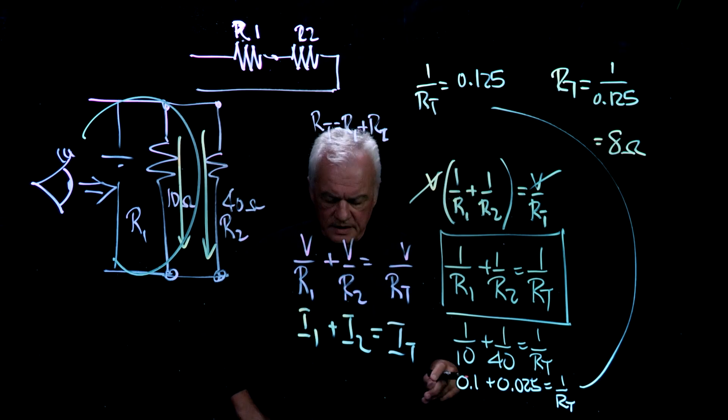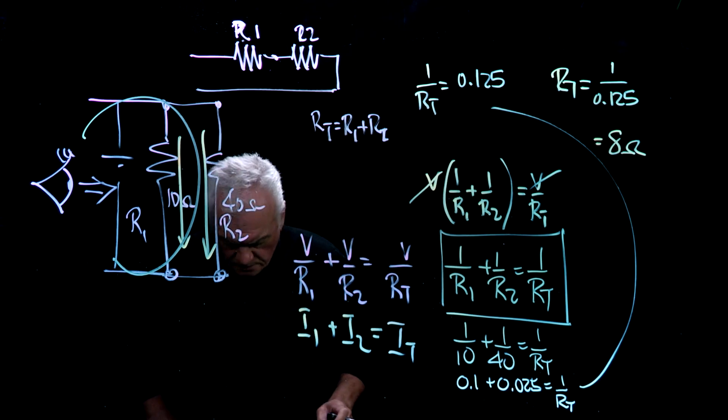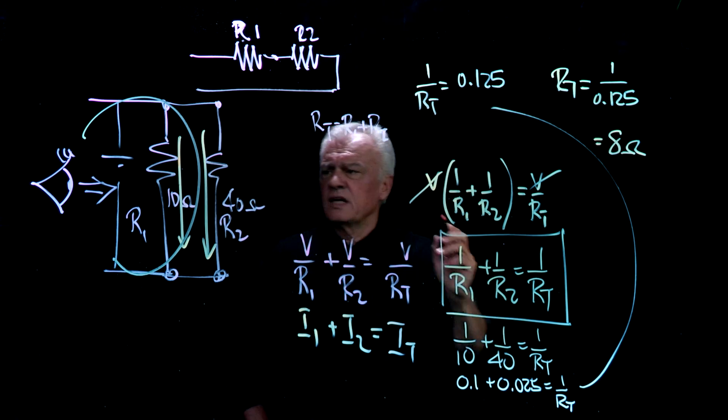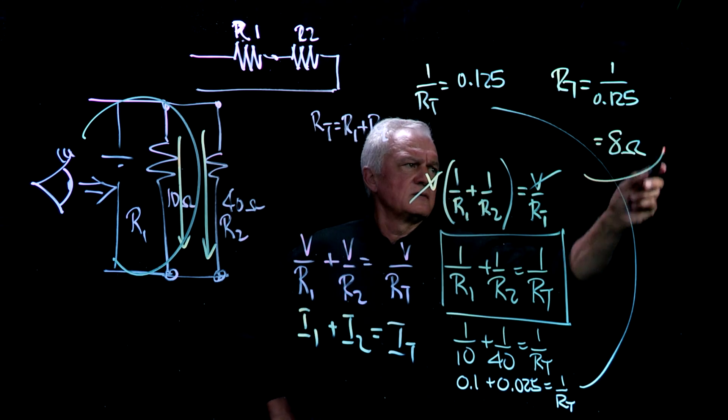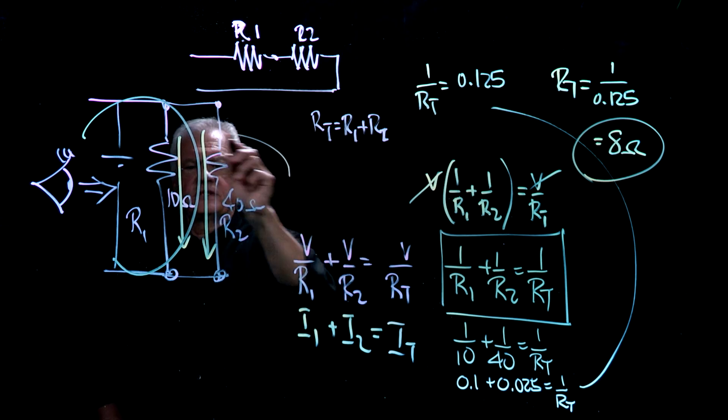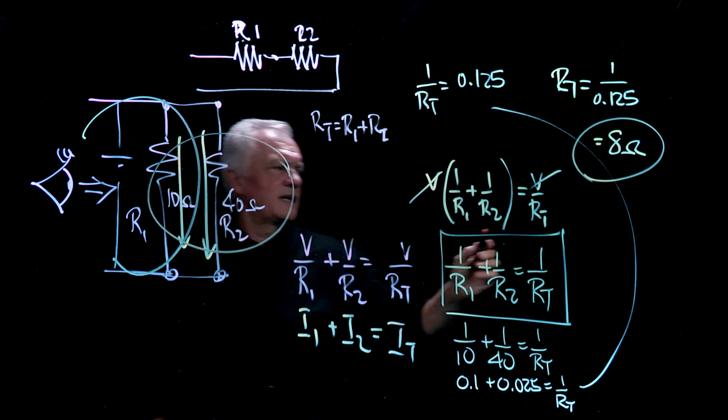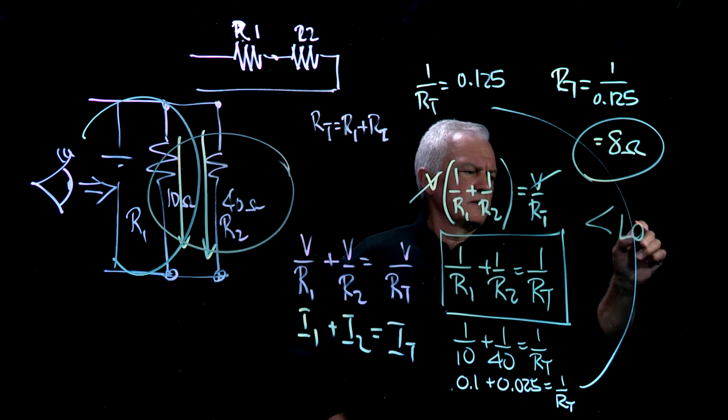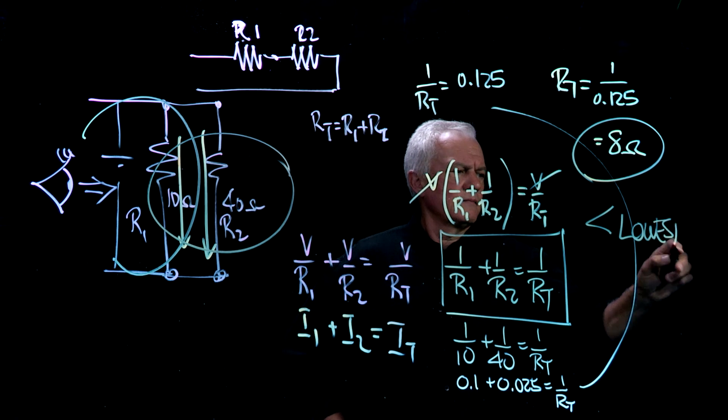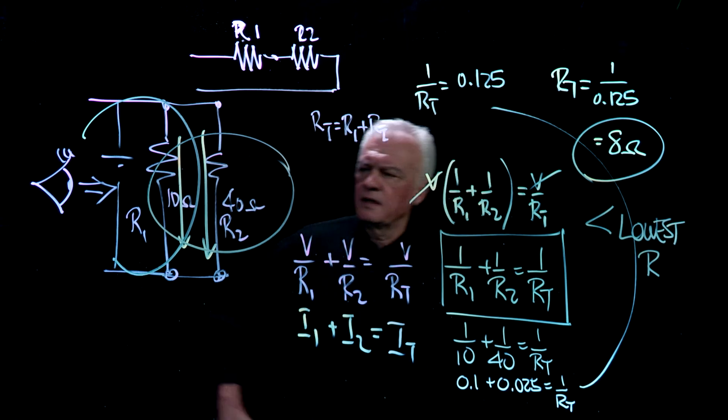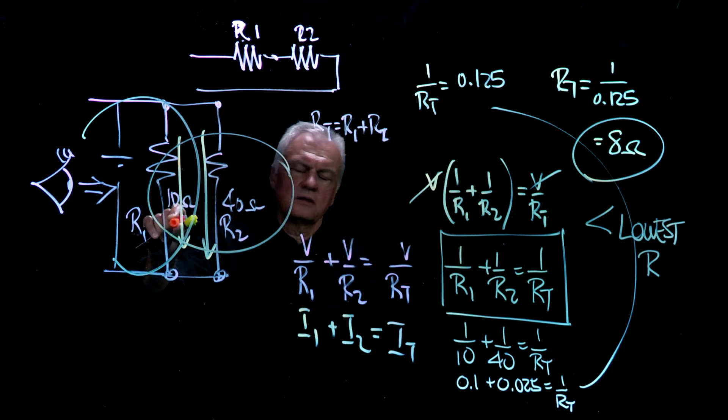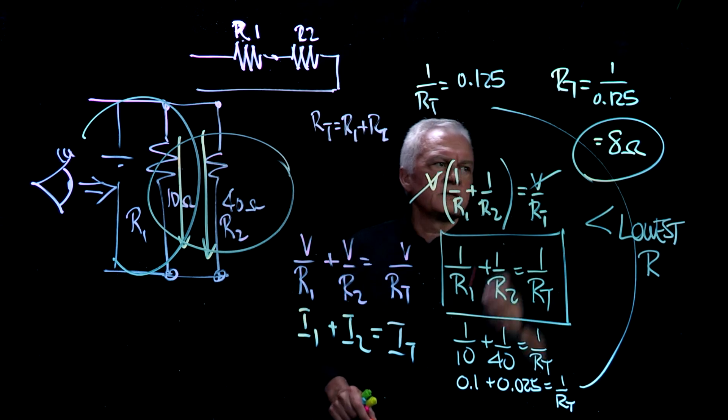Now one of the rules that you need to capture is that whenever resistors are in parallel, the resulting resistance will be less than the lowest one. As noted here, the lowest one was 10 ohms. The result is 8 ohms.